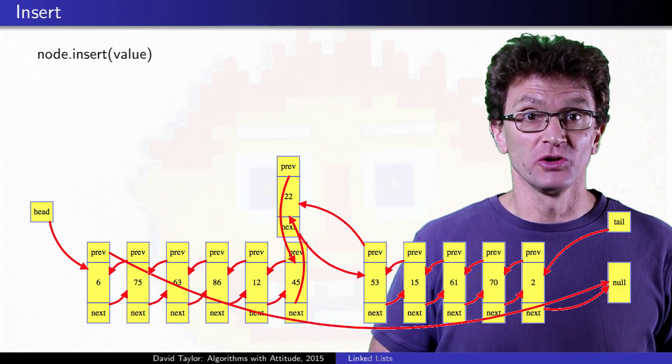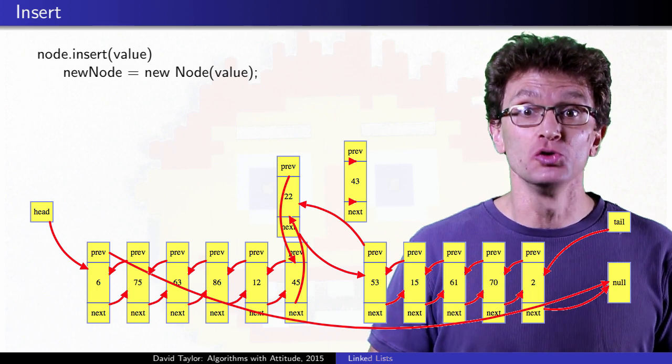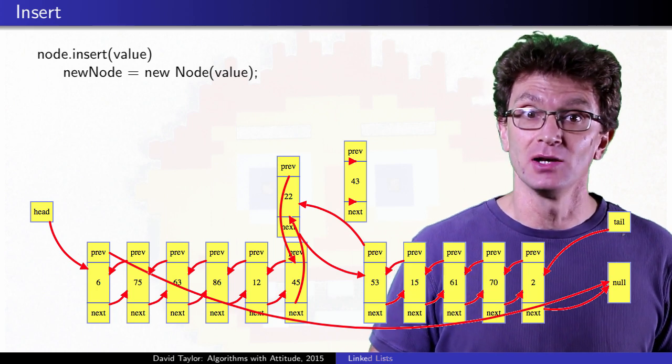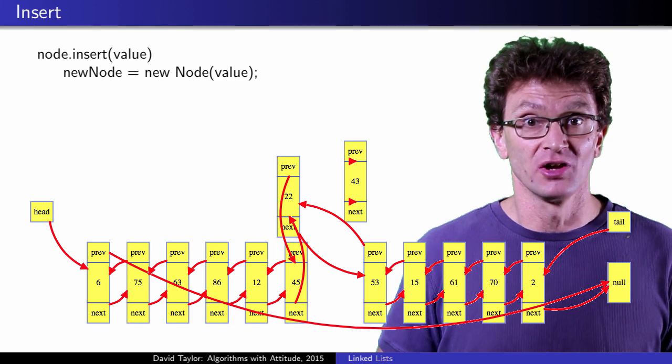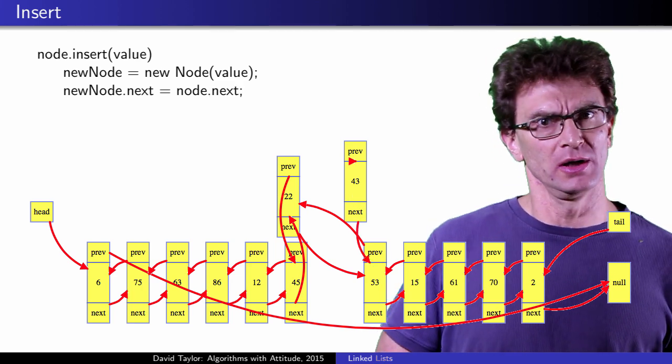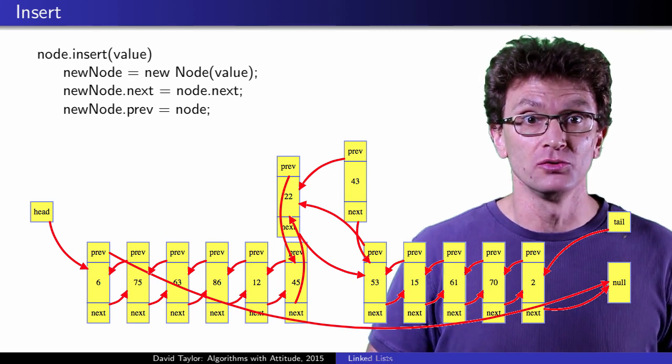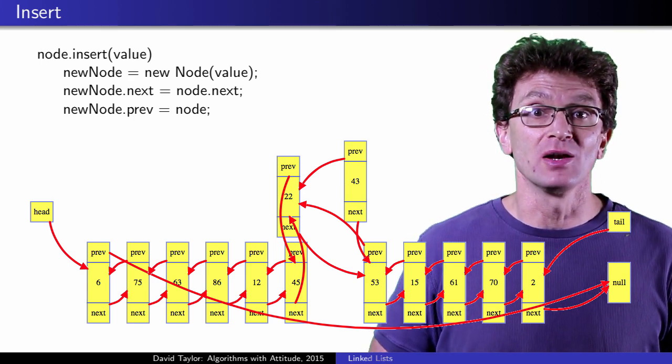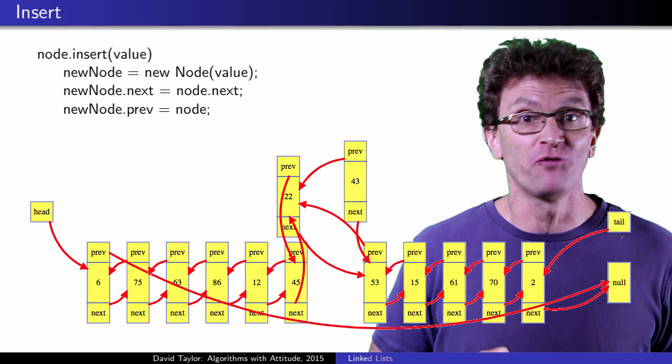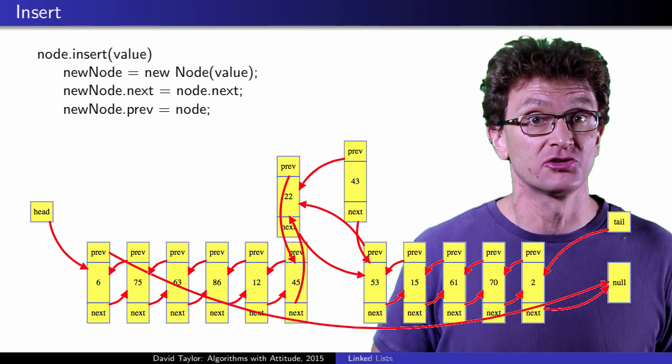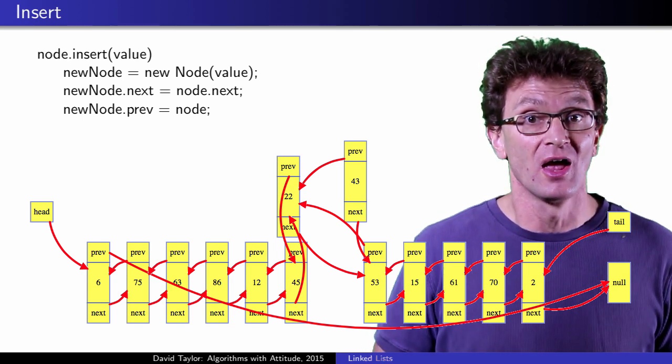For every insertion, we start by creating a new node with the new data, 43 here, in that node. Next, set the new node's references. Its next node will be the current next node of the 22, its previous node will be the 22 node. We generally want to update all of the new node references before modifying the original list, so that we don't lose references.